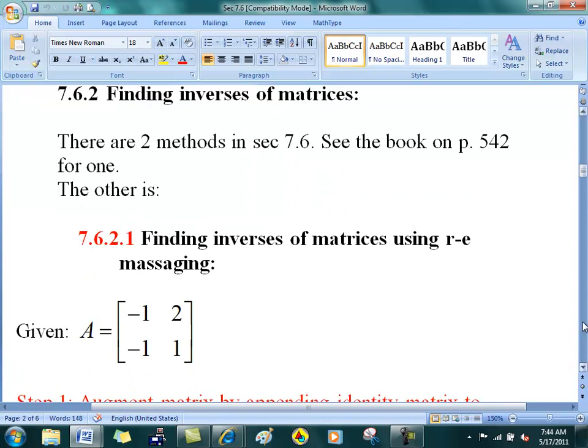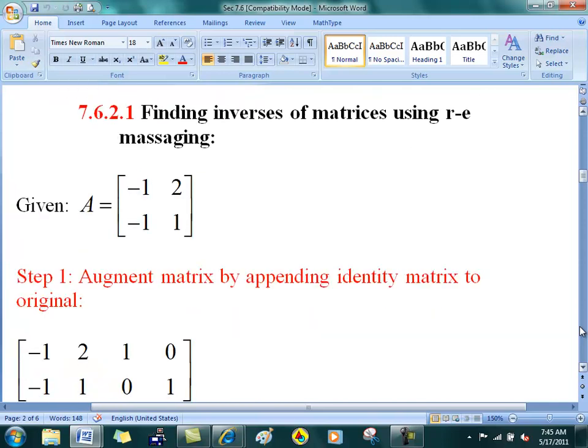To find inverses of matrices, there are several methods of finding inverses. There's one method in the book on page 542. I want you to take a look at it, only because it's a pretty dumb way of doing it. Page 542. It's a pretty ugly way of finding an inverse. So don't study too long. It's not worth it.